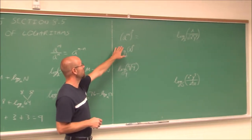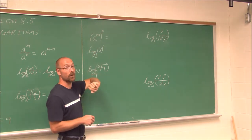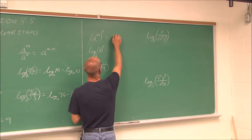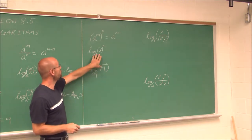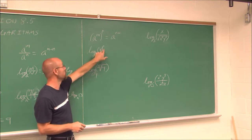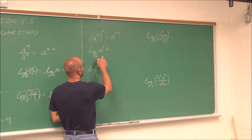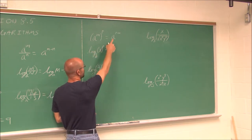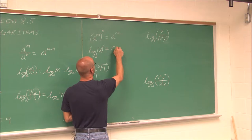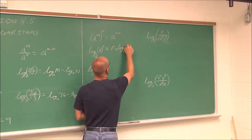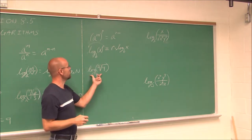Let's look at the power rule. If a base to a power is raised to another power, we multiply the exponents: a to the r times m. For logarithms, if the argument is raised to a power, since a logarithm is an exponent, we can apply the power rule: multiply the power times the log, giving r times log base b of x. Think of it as bringing the exponent out front.